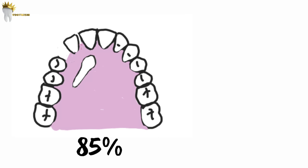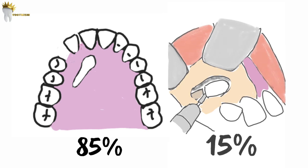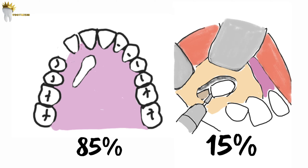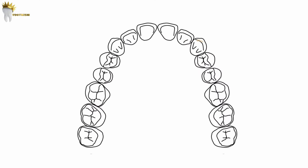In 85 percent of cases they are found palatally, and in 15 percent of cases they are in a labial position. Maxillary canines should erupt by age 11 or 12 years.